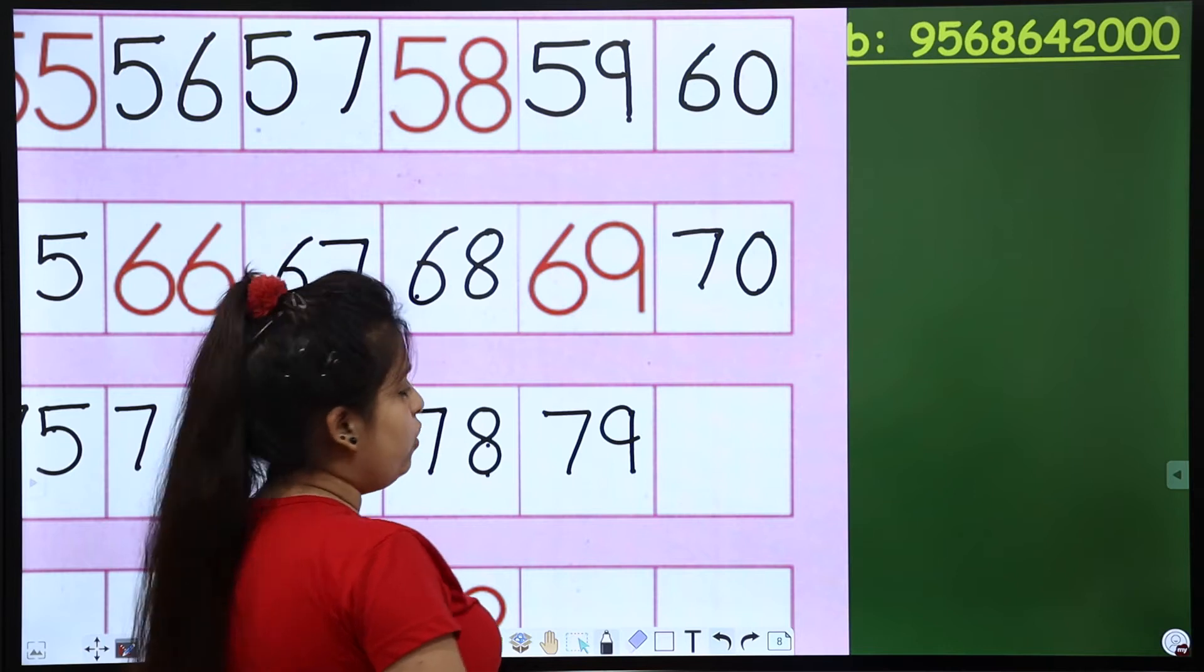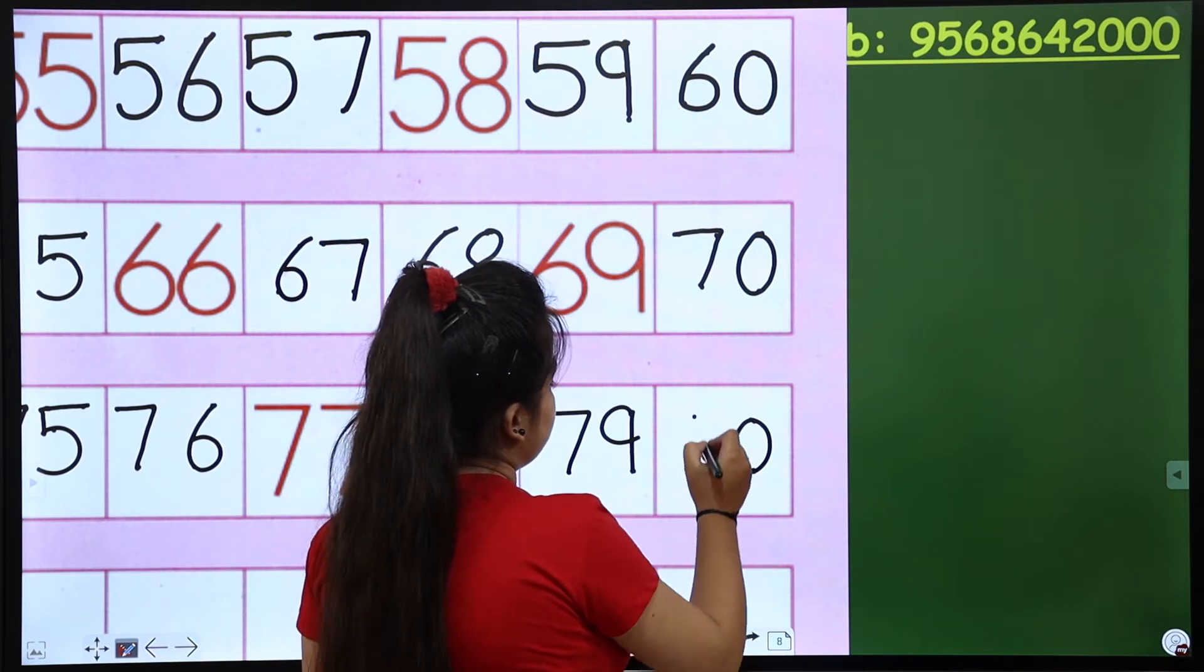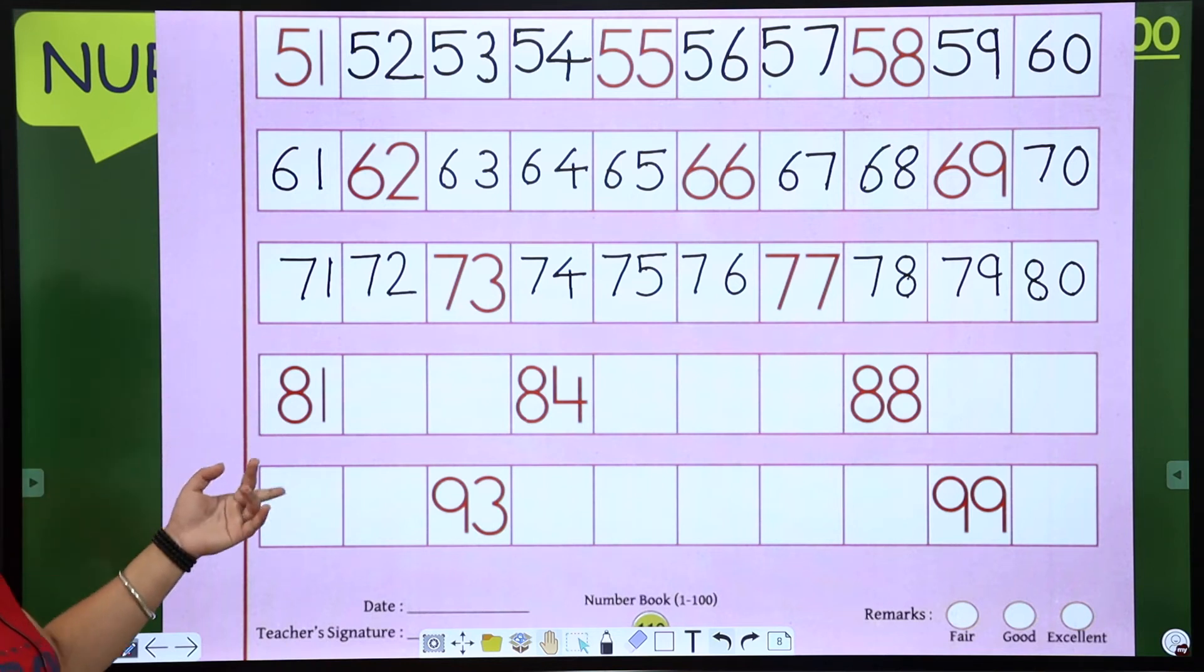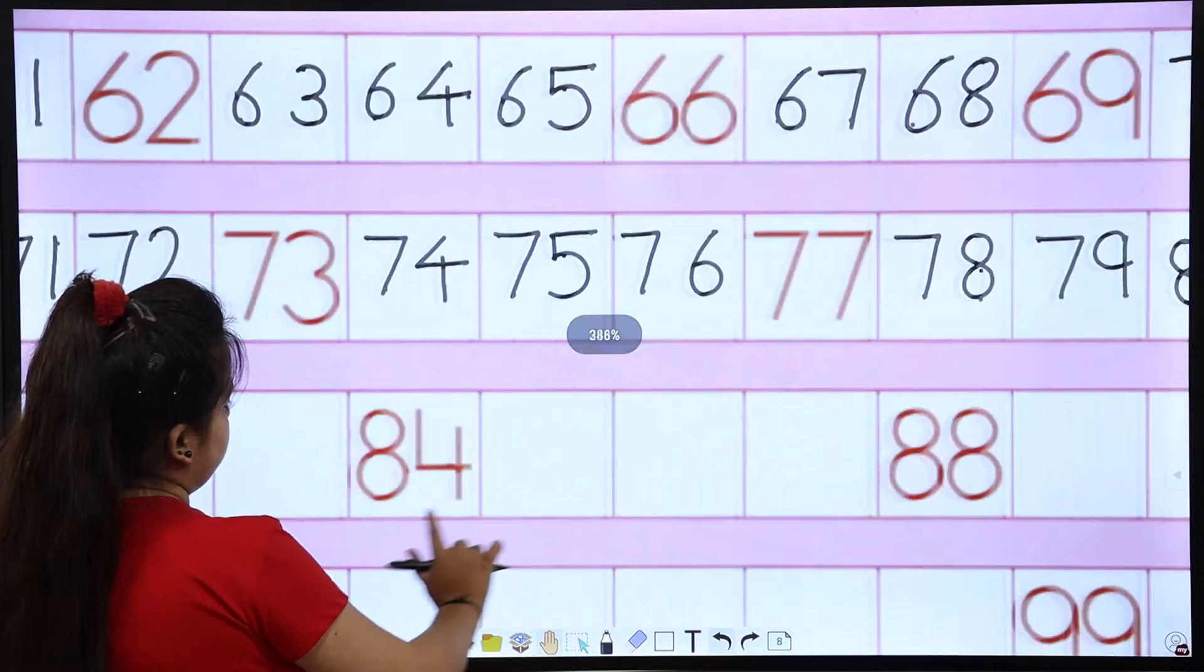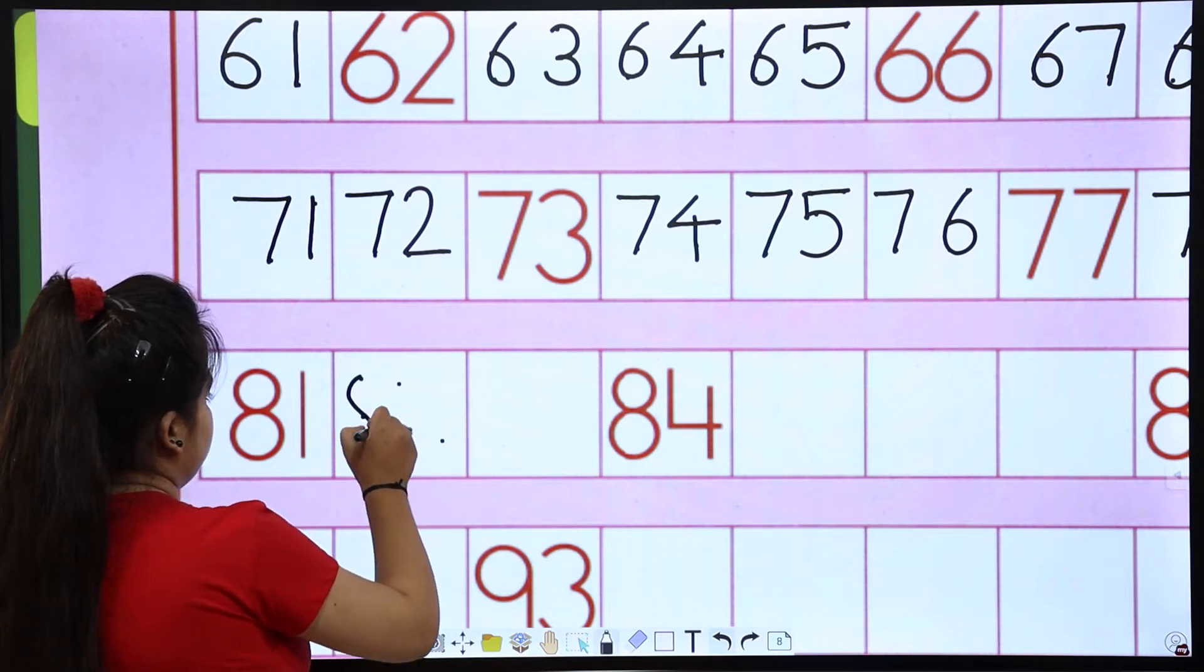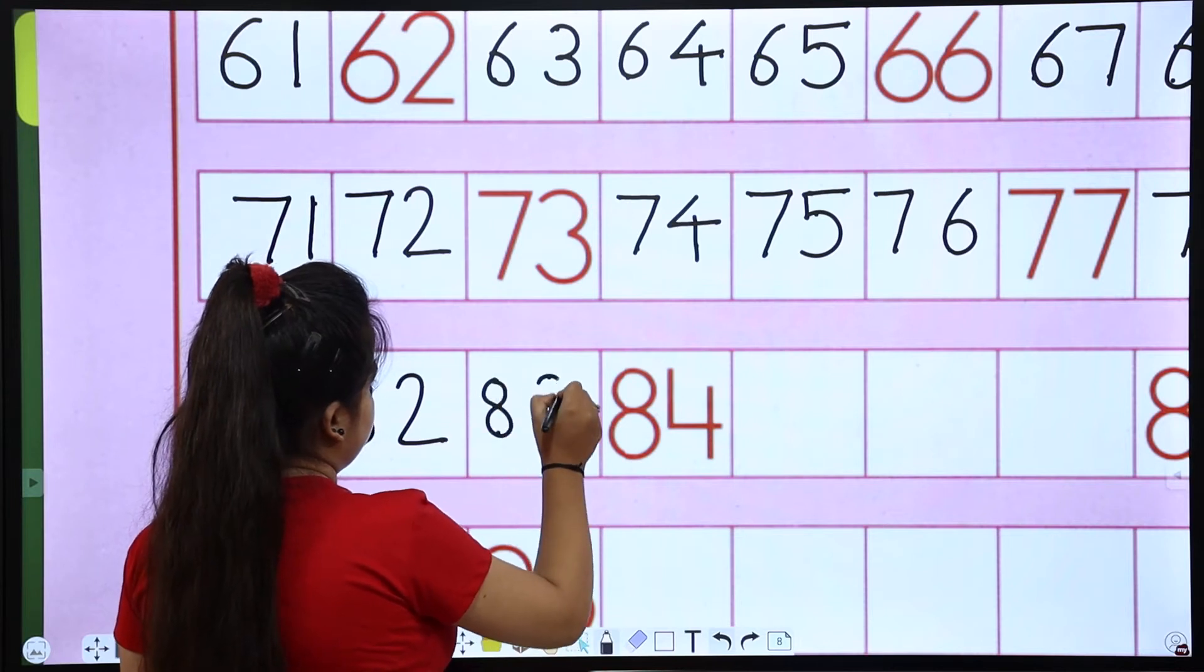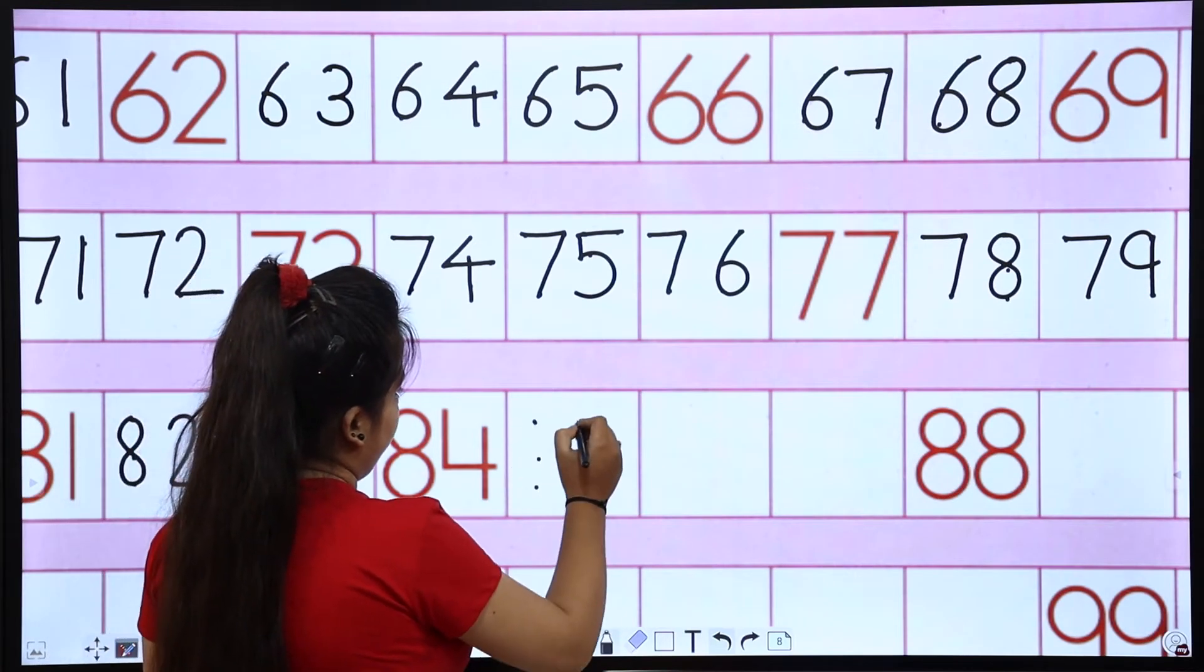Now 80, 80. How is it? Because after 9 it comes to 0 and after 7 it comes to 8. So 80, 80. Okay, two more lines. Okay, after 80, 80, 80, 81. Then 82, 82, 82. 83, 83.